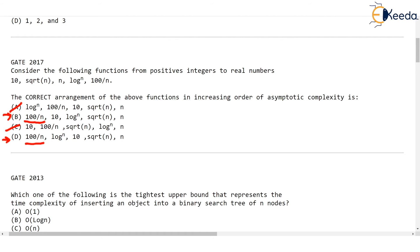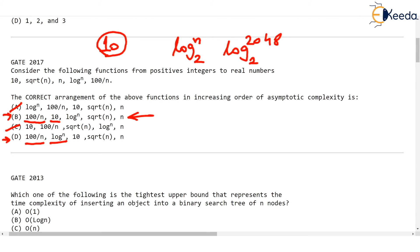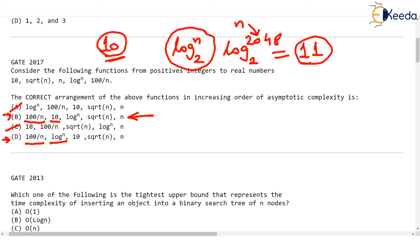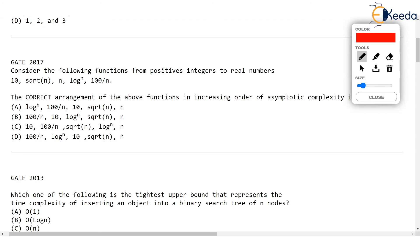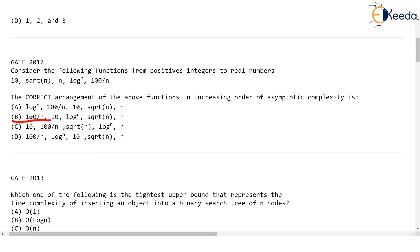After 100/n, in option D log n comes next, and in option B, 10 comes next. Now talk about 10 and log n — base is not given, so we assume base 2. Which one is smaller? As n grows larger, log n increases. For example, log₂(2048) = 11, since 2^11 = 2048. So when n becomes very large, log n will exceed 10. Therefore 10 is the next smallest after 100/n. This is option B — in which the first two functions are 100/n and 10.